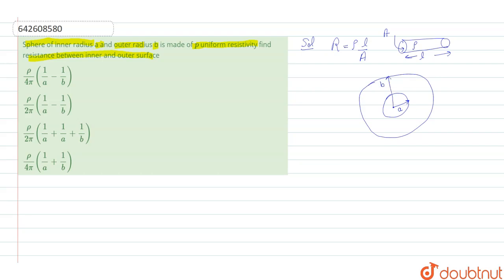In this situation, the radial length is to be counted as L and the total surface area of the sphere to be counted as A.